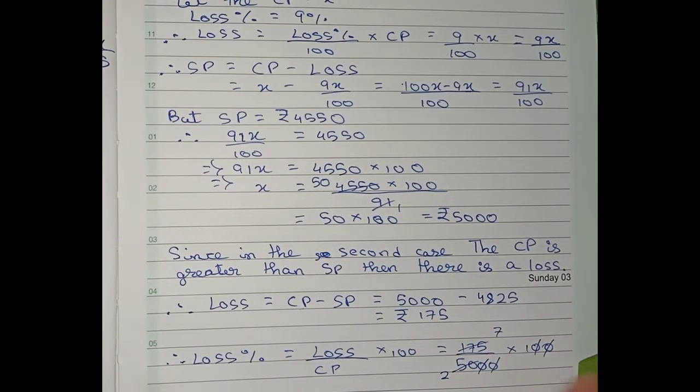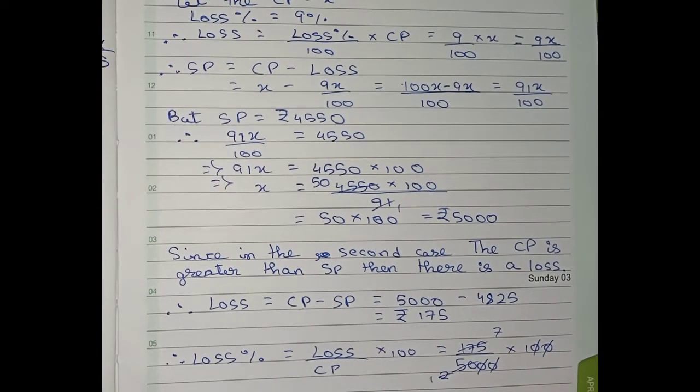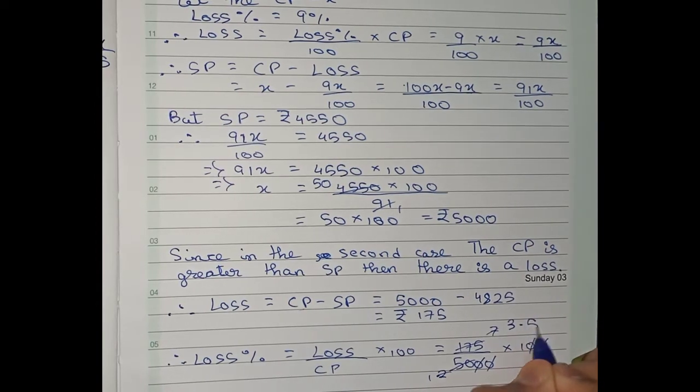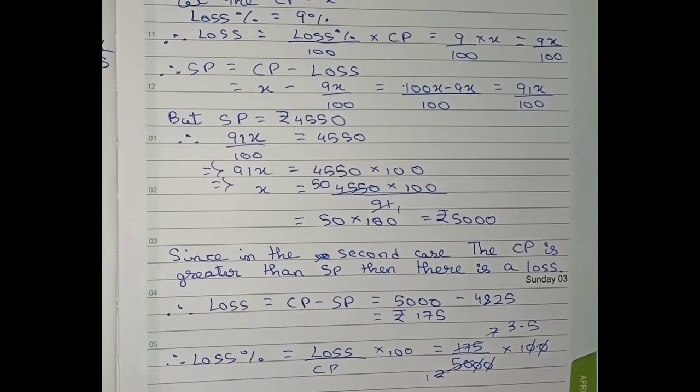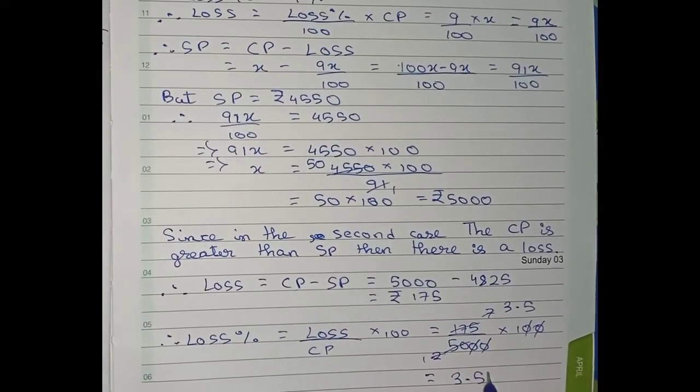So it becomes 2 and 25. It becomes 7 by 2. Now I can cut this. The answer will be in decimal format. So it becomes 3.5, equals to 3.5 percent is the loss.